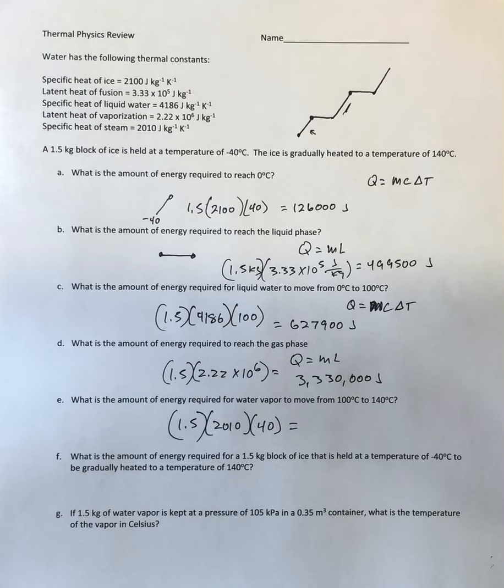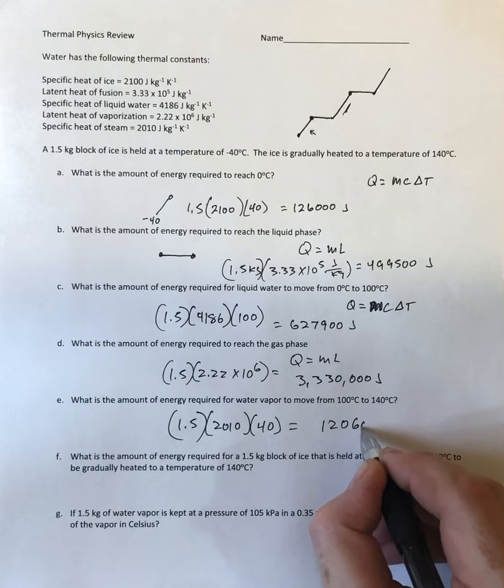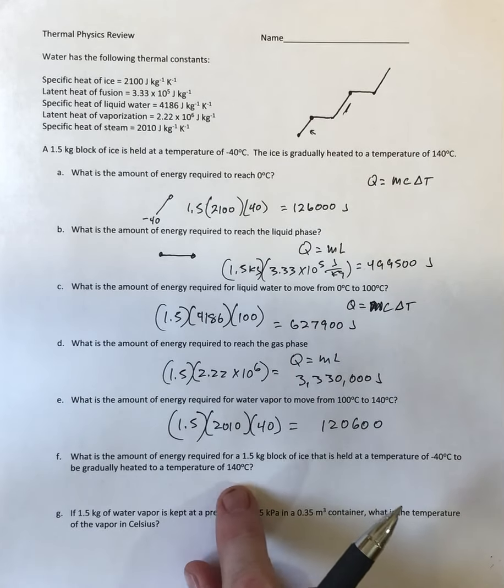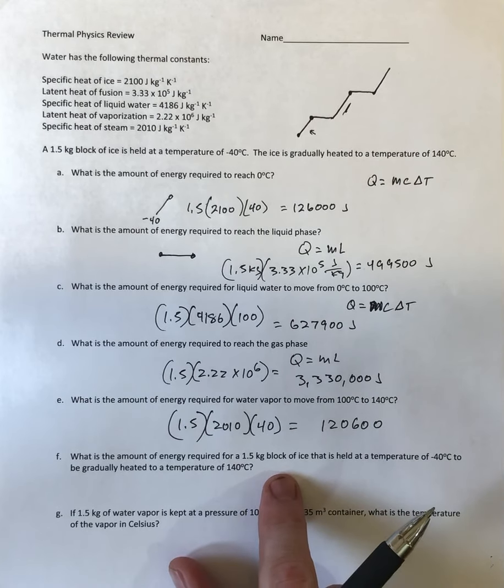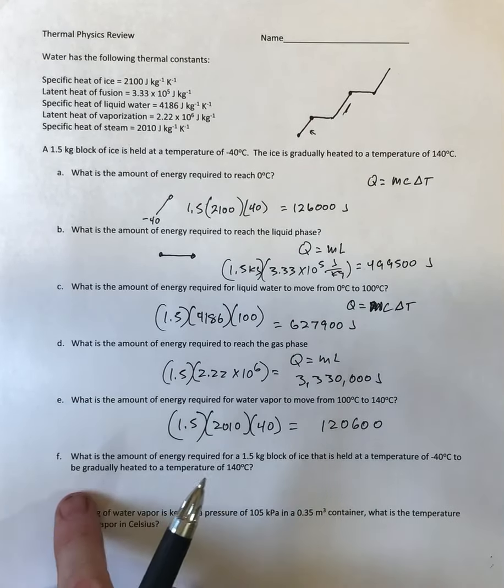Simple enough, 1.5 times 2010 times 40 equals 120,600. And then this question, I'm saying what is the amount of energy required for a 1.5 kilogram block that is held at a temperature of negative 40 and it's gradually heated to 140.